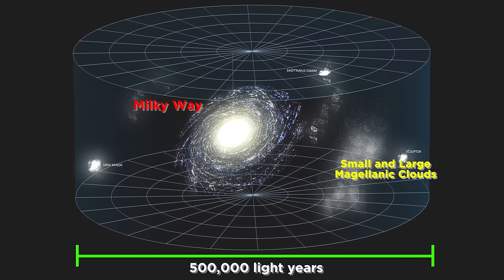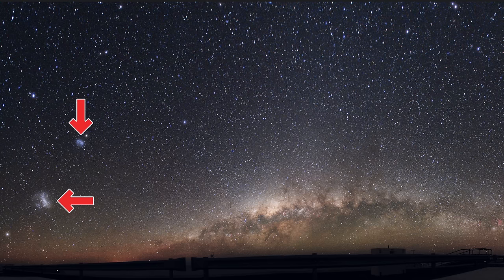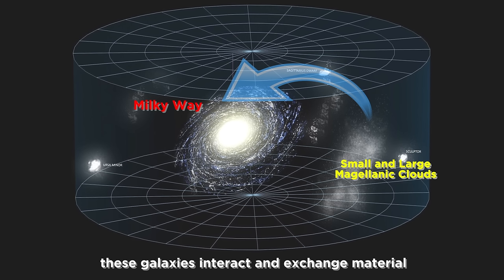The Milky Way also has some satellite galaxies, which are smaller galaxies that orbit around it. The most prominent of these are the Small Magellanic Cloud and Large Magellanic Cloud, each around a tenth the size of the Milky Way, and observable from the Southern Hemisphere. These interact with the Milky Way as they orbit, resulting in disturbances and also exchange of material.